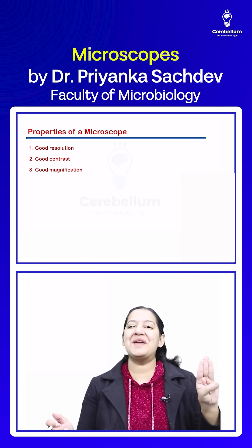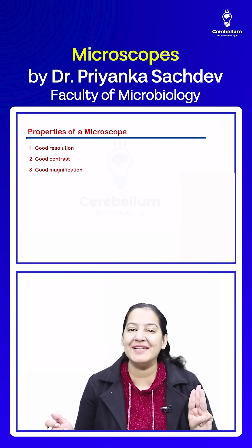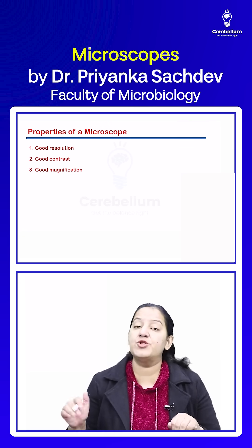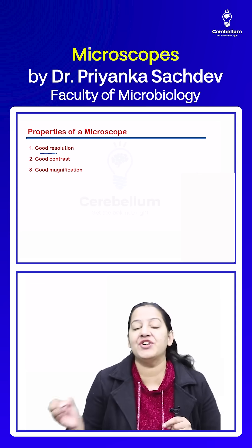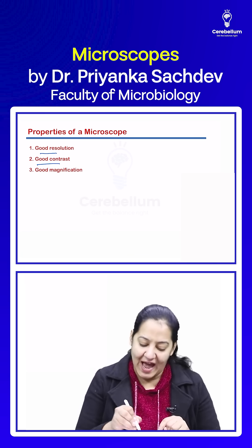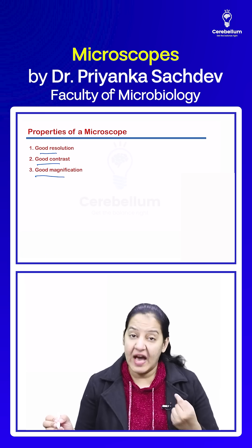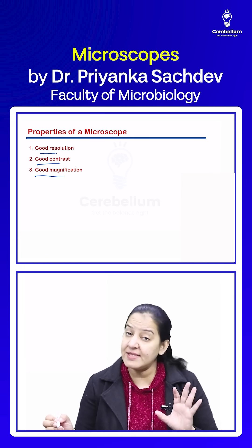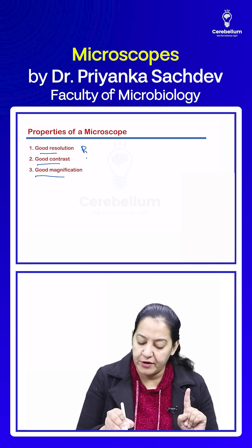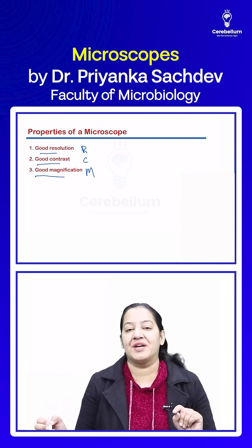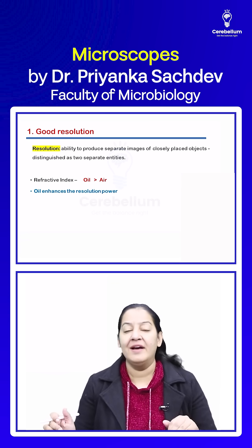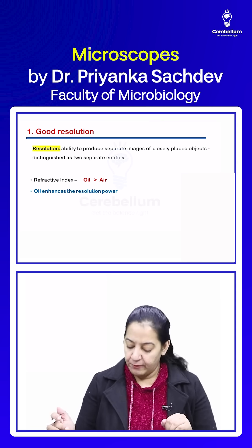Let's discuss the three important properties of a microscope. All microscopes should have good resolution, good contrast, and good magnification — then only is a microscope considered a good microscope. Now let's understand the meaning of each of them one by one. Let's start with resolution.